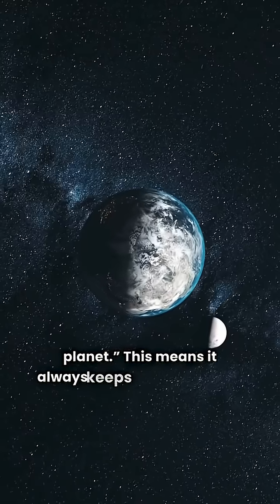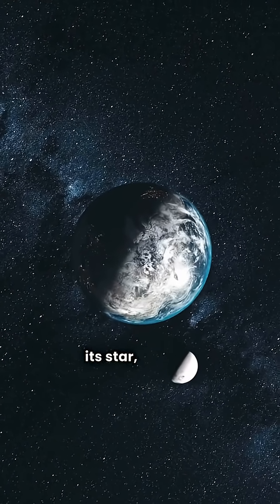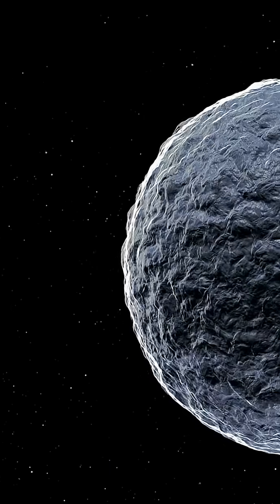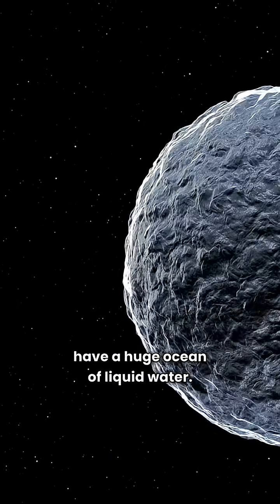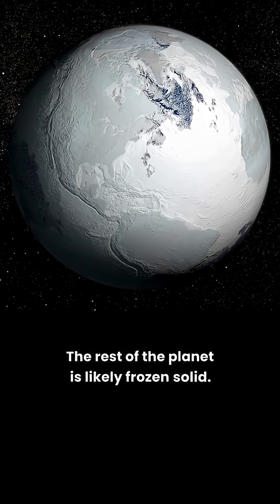This means it always keeps one side facing its star, just like the Moon does with Earth. On the side facing the star, it might have a huge ocean of liquid water. The rest of the planet is likely frozen solid.